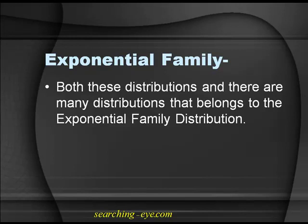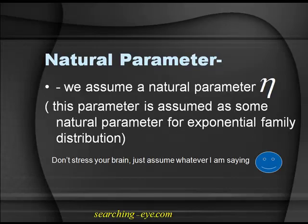In this lecture I generally tackle the case when the natural parameter in the exponential family is scalar, because in Gaussian and Bernoulli it comes out to be scalar. I will show later when I discuss softmax regression that these parameters turn out to be a vector quantity, not scalar. We assume there exists a natural parameter eta for exponential family distribution.